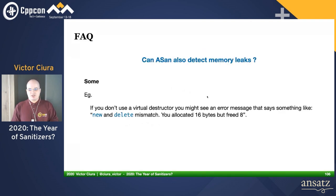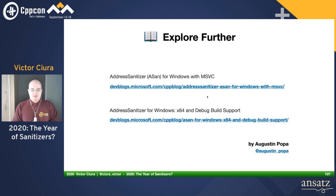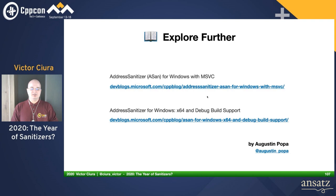A frequently asked question: can ASAN also detect memory leaks? Yes, it can detect some — for example, if you don't have a virtual destructor, it can report a new-and-delete mismatch in terms of allocated sizes. I encourage you to explore further; there are two very good articles by Augustine Poppa dealing with all the details I described here and many more.